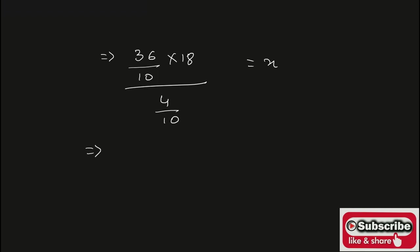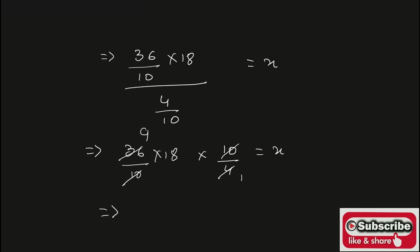Now dividing the fractions, we get 36 upon 10 into 18 into 10 upon 4, is equal to x. Cancel the terms — 0 and 0 got cancelled. 9 into 18 is 162, which is the value of x. The value of the question mark is equal to 162. This is the answer.